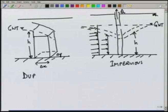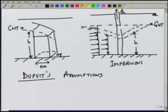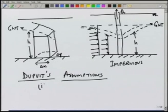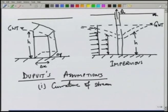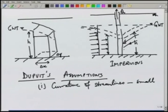There are some assumptions we have to make in order to solve this. These assumptions were suggested by Dupuit and are called Dupuit's assumptions, which enable us to solve unconfined aquifer flow problems. The first assumption is that the curvature of streamlines is small. If you look at the streamline pattern in the unconfined aquifer case, the first assumption says that the streamline curvature can be taken as small, and therefore the flow will essentially be horizontal.